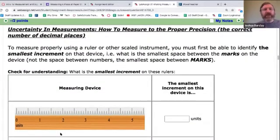Uncertainty in measurements. It's a two-step process to actually measure to the right number of sig figs.